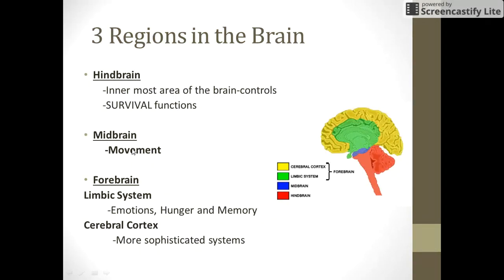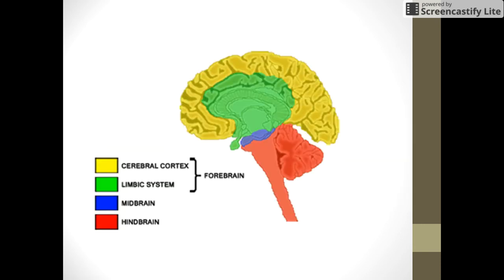The next area is known as the midbrain. AP Psych doesn't spend much time on the midbrain, but it's the little blue area and it's responsible for some of our movement. The last region is the forebrain, broken into two parts: the limbic system, which controls emotions, hunger, and memory — shown in green — and then the cortex, the yellow area, also called the cerebrocortex, known as your gray matter. Remember, the forebrain is split into the limbic system and the cortex.